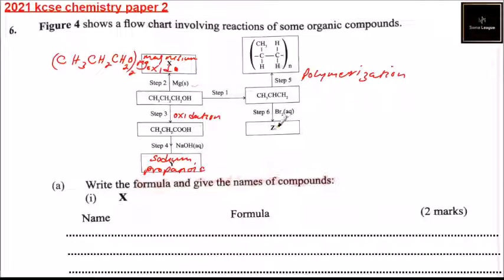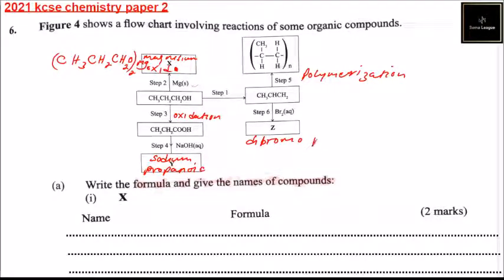In Step 6 we are adding bromine. Propene in an aqueous state — propene reacts with bromine to get dibromopropane.